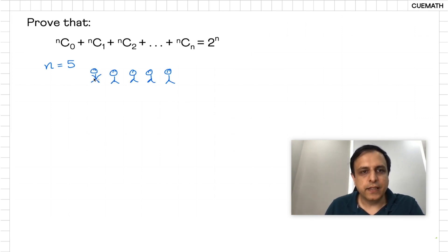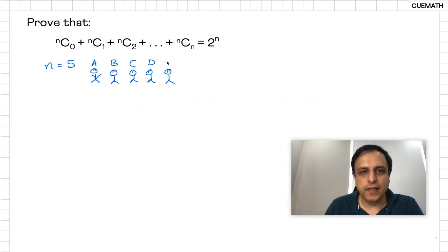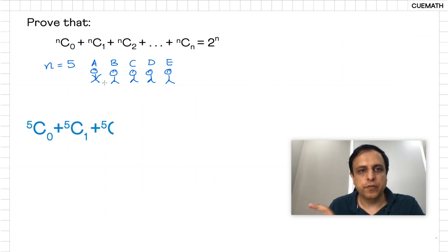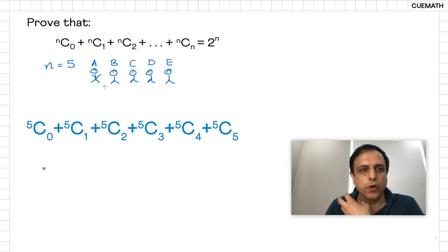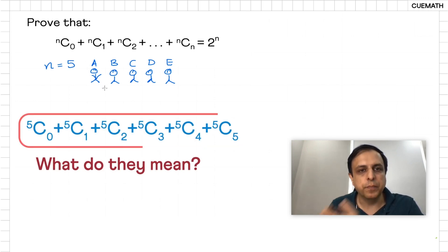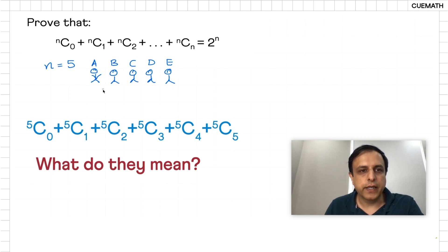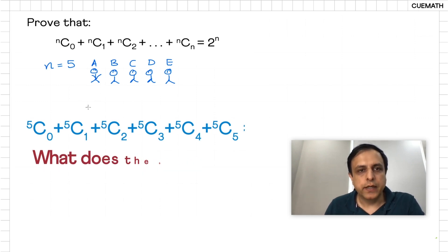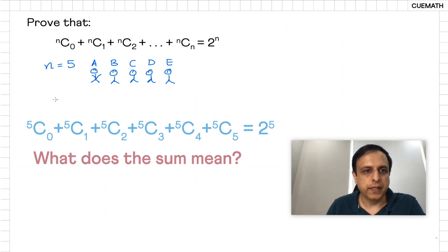Let's say these 5 people are Adam, Bob, Carol, Dan, and Eve. So what do the binomial coefficients 5C0, 5C1, 5C2 up to 5C5 mean in the context of these 5 people, and what does the sum of those coefficients mean?